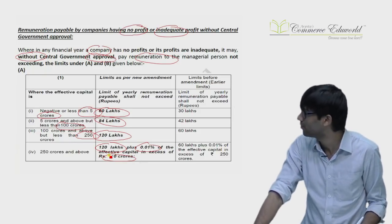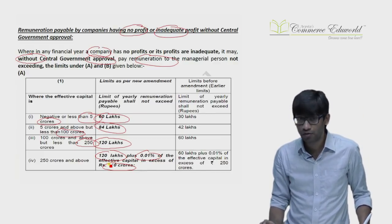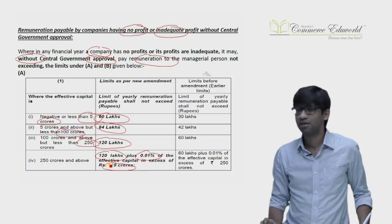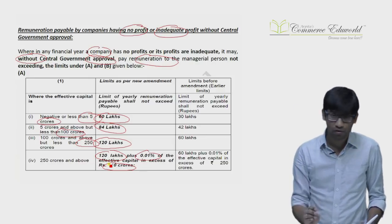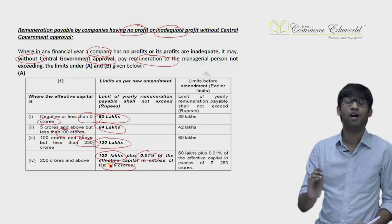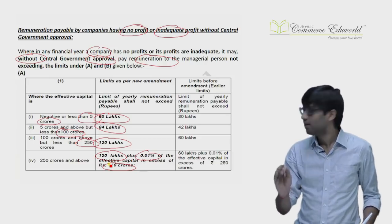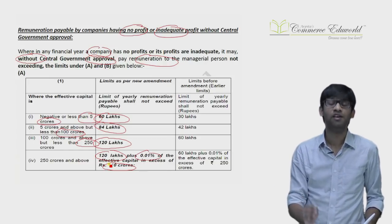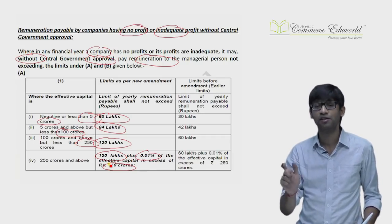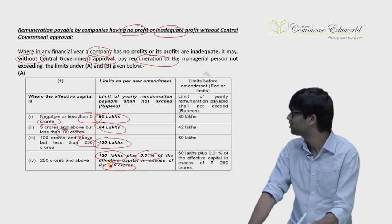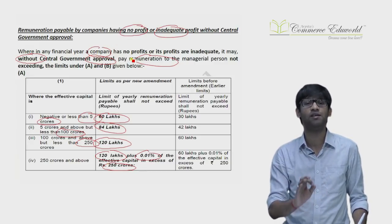To remember the new limits: on the effective capital side, remember 5 crores, 100 crores, 250 crores, and 250 crores and above. On the remuneration limit side, remember 60, 84, 120, and 120 plus 0.01% of the amount exceeding 250 crores. This much maximum remuneration can be allowed even without taking permission of the Central Government.